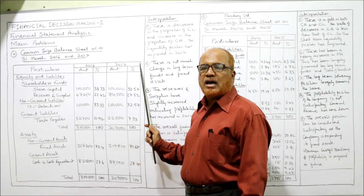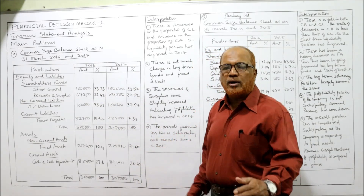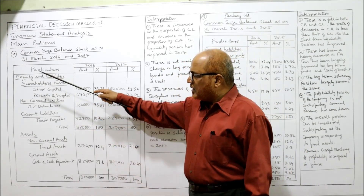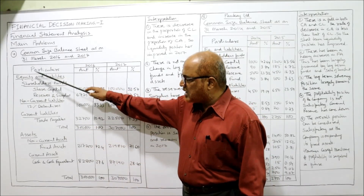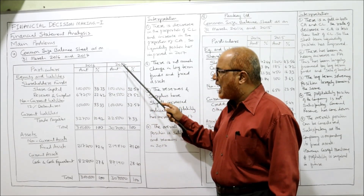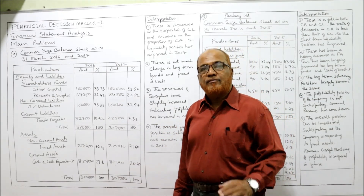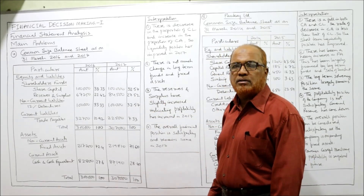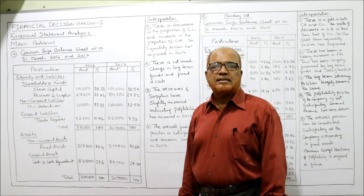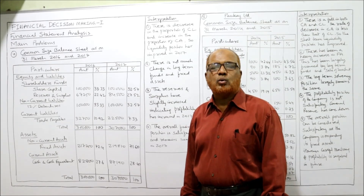The format for the common size balance sheet has two broad columns for 2016 and 2017, each with sub-columns for amount and percentage. I have copied the same format and amounts from the problem for 2016 and 2017. The only new point is that the percentages are not given in the problem — we calculate those. In a balance sheet, the base is the total assets and total liabilities, which are always equal.